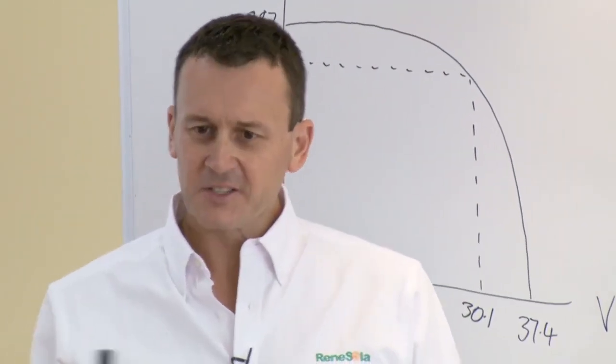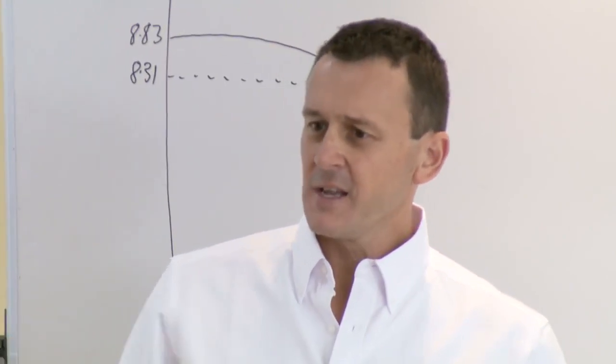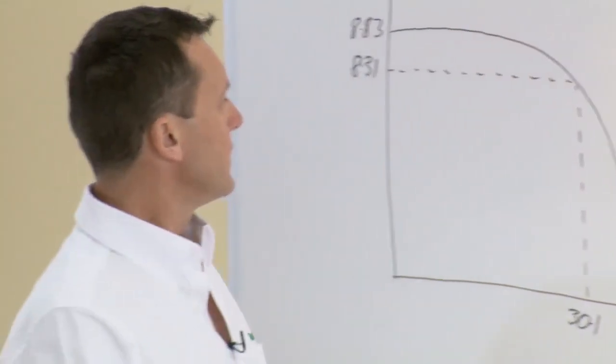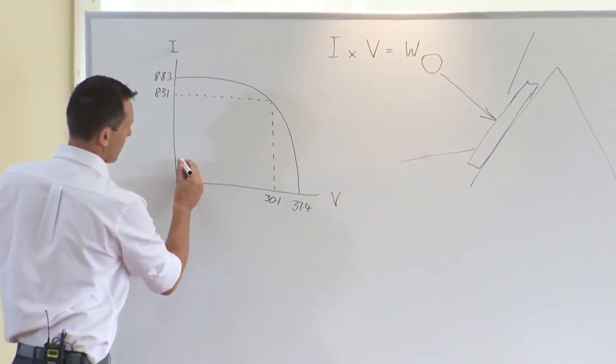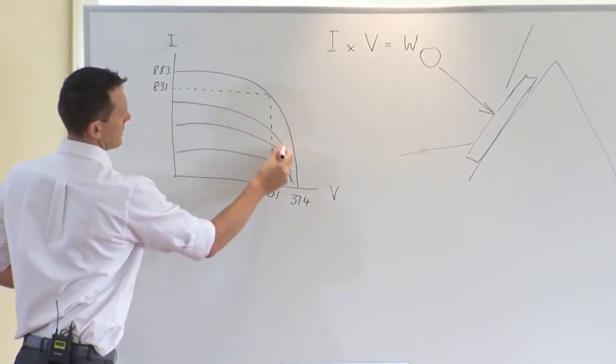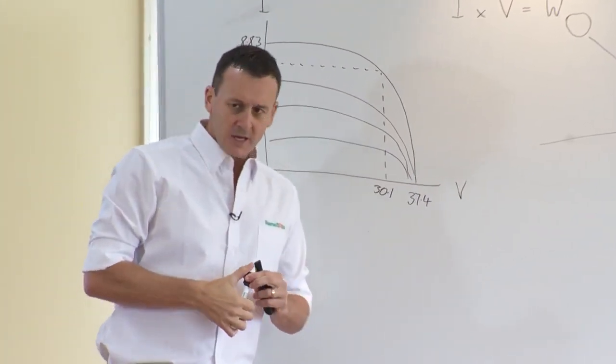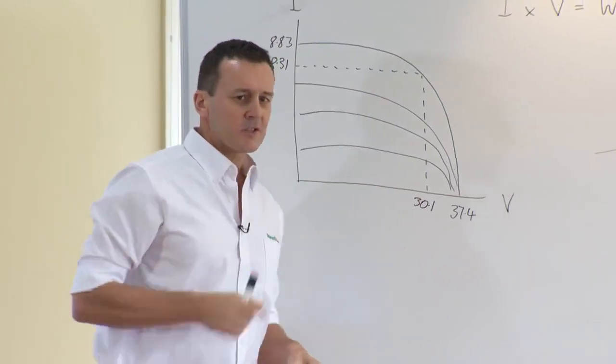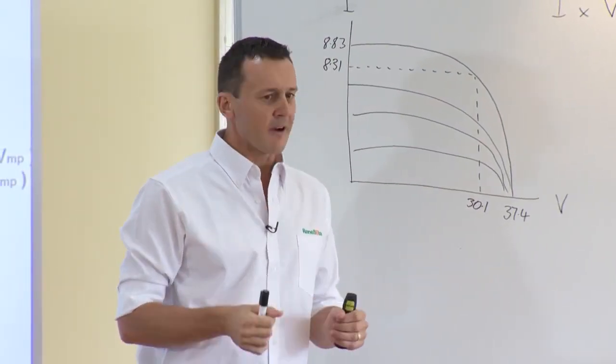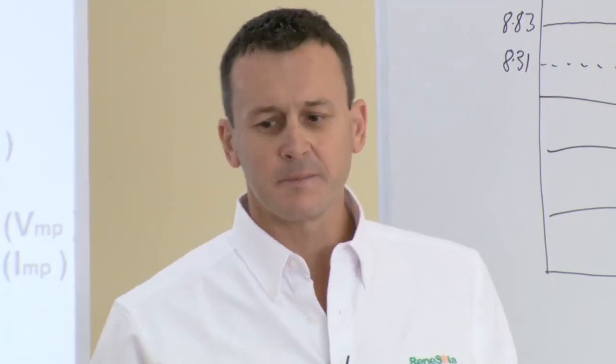So as you can see by that chart, as that irradiance changes and increases, so does that curve increase from your lower irradiance figures down here and then working towards your higher figures up here. So that's just illustrating how your current is determined by that angle of sun or the amount of irradiance in particular.